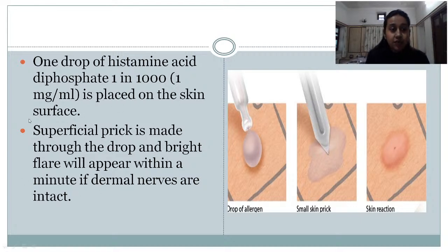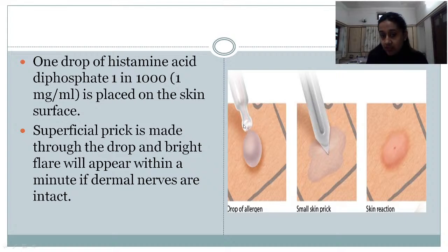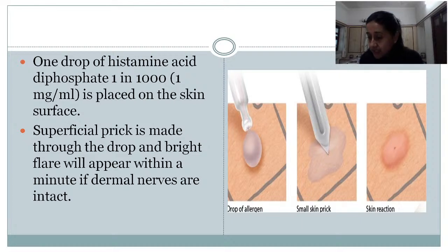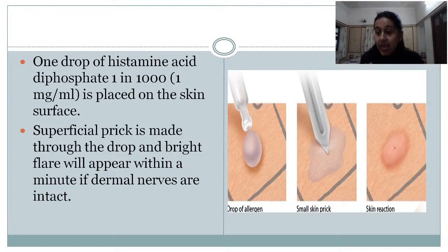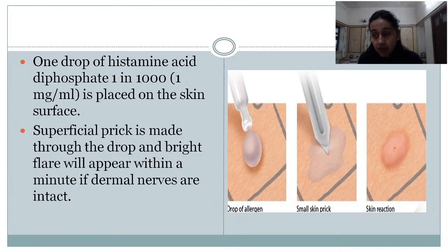To perform the histamine test, one drop of histamine is placed on the skin and a superficial prick is made through the drop. Within a minute, a bright red flare appears if the dermal nerve is intact. In leprosy patients, the dermal nerves are usually not intact, so there will be no peripheral flaring — only the first two steps of Lewis occur and the axon reflex is absent. This test is mainly done for tuberculoid leprosy since nerve damage occurs at the initial stage in tuberculoid leprosy.